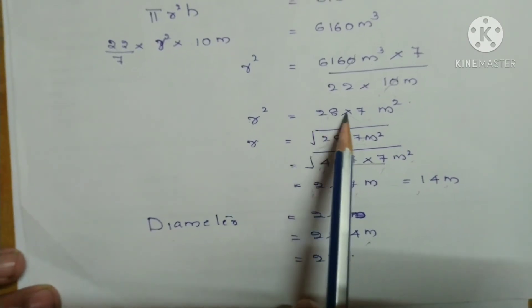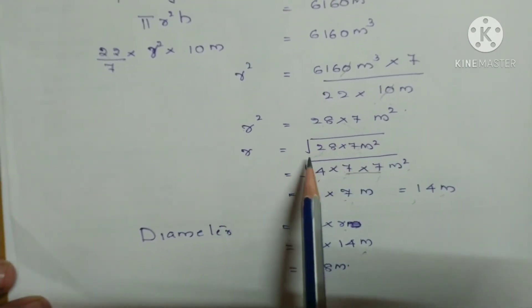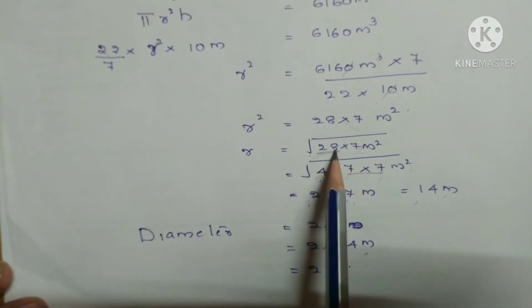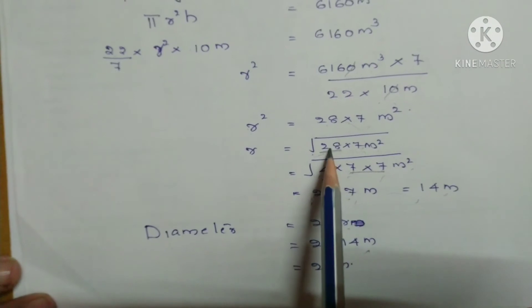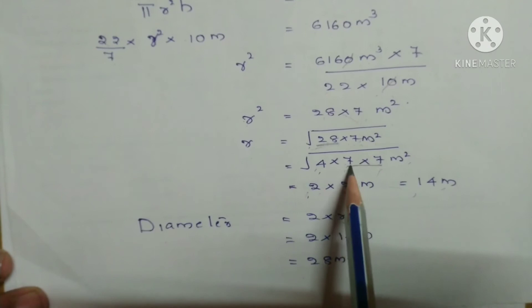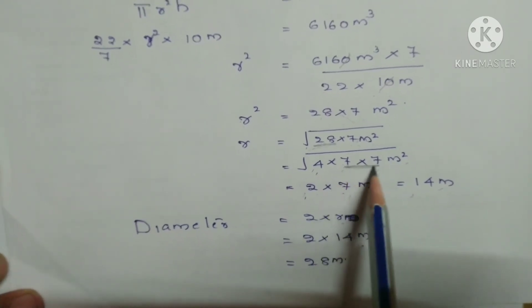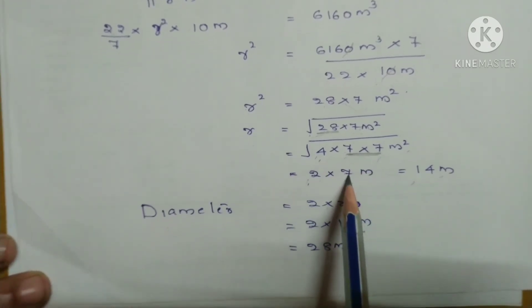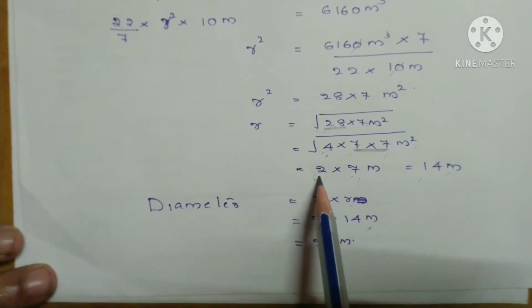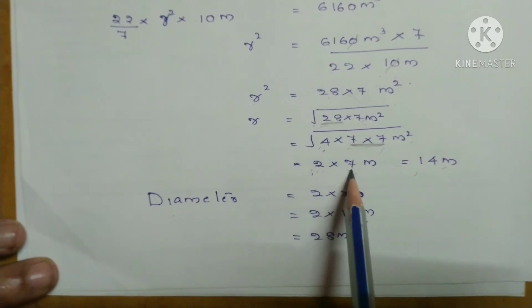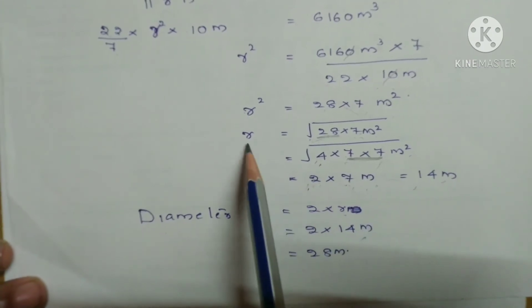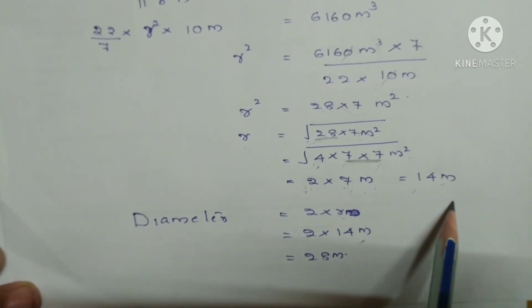So R² is 28 into 7. So R is square root of 28 into 7 meter square. This 28 we can factorize: 4 sevens are 28, so 4 into 7 into 7 meter square. Now look here, 7 is coming 2 times. So square root means 1 time we can take outside. 4 is a perfect square, so its square root we know: 2. So 2 into 7 meter. Meter square is given, so its square root is meter. So radius we got 14 meter.